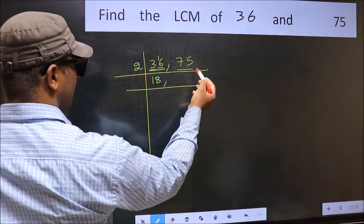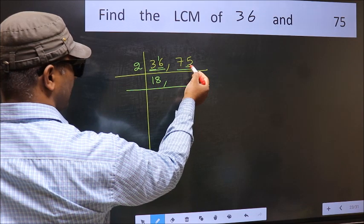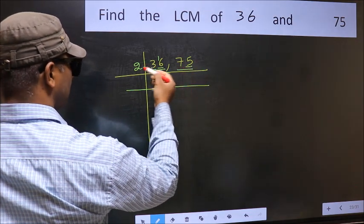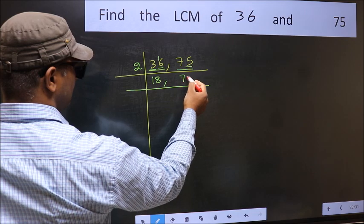The other number 75. Last digit 5, not even, so this is not divisible by 2. So you write it down as it is.